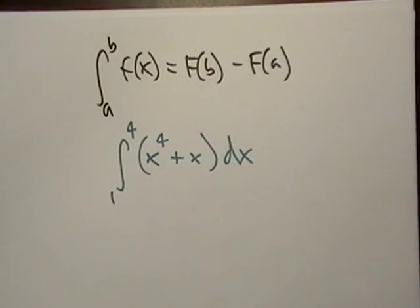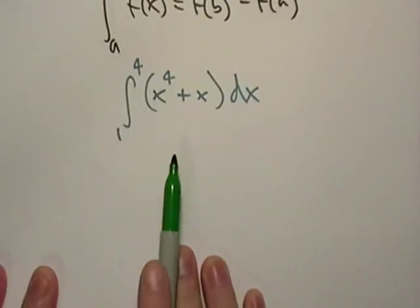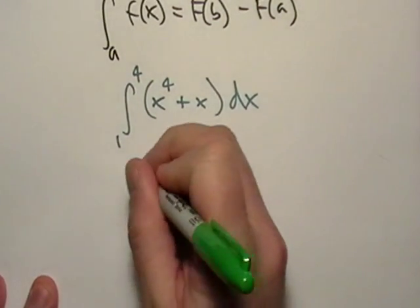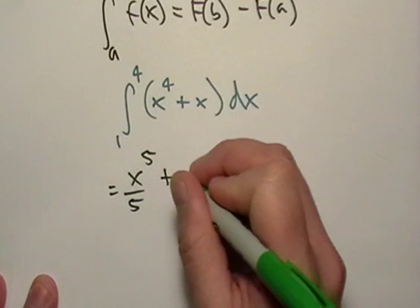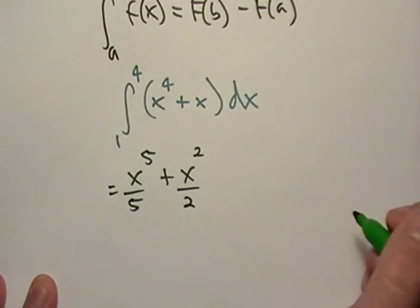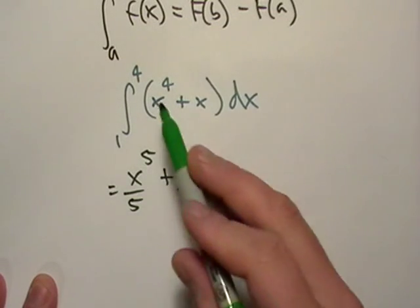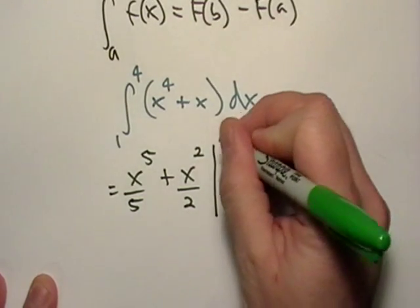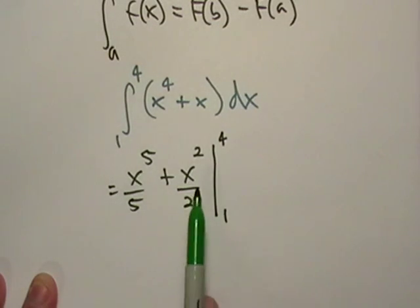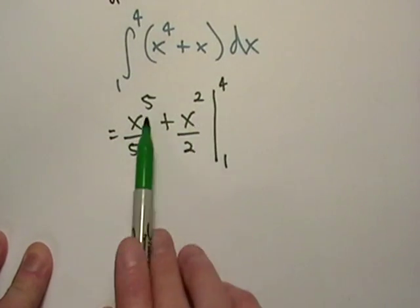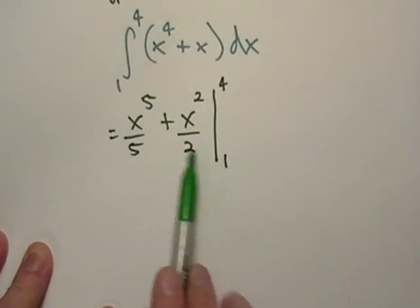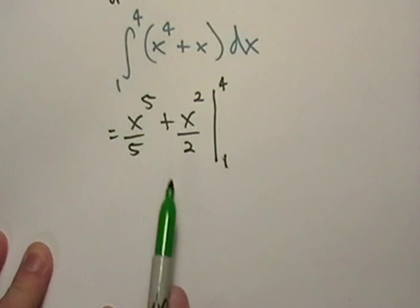Let's do an example of that. Here's our general form. The first thing we'll do is take the general antiderivative, which is going to be X to the fifth over five, plus X squared over two. Normally we'd write plus C, but the notation now is to put a bar on it with the bounds four and one, which implies we're going to plug four in for the X's and then subtract the same thing with one evaluated.